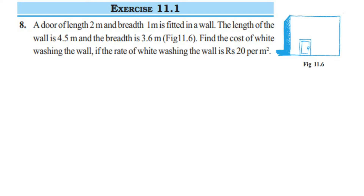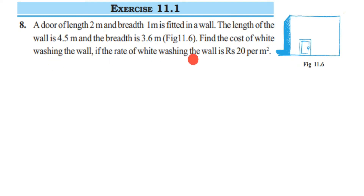Here is question 8 from exercise 11.1, the perimeter and area chapter. The question is: a door of length 2 meters and breadth 1 meter is fitted in a wall. The length of the wall is 4.5 meters and the breadth is 3.6 meters, as given in figure 11.6. Find the cost of whitewashing the wall if the rate is rupees 20 per meter square.